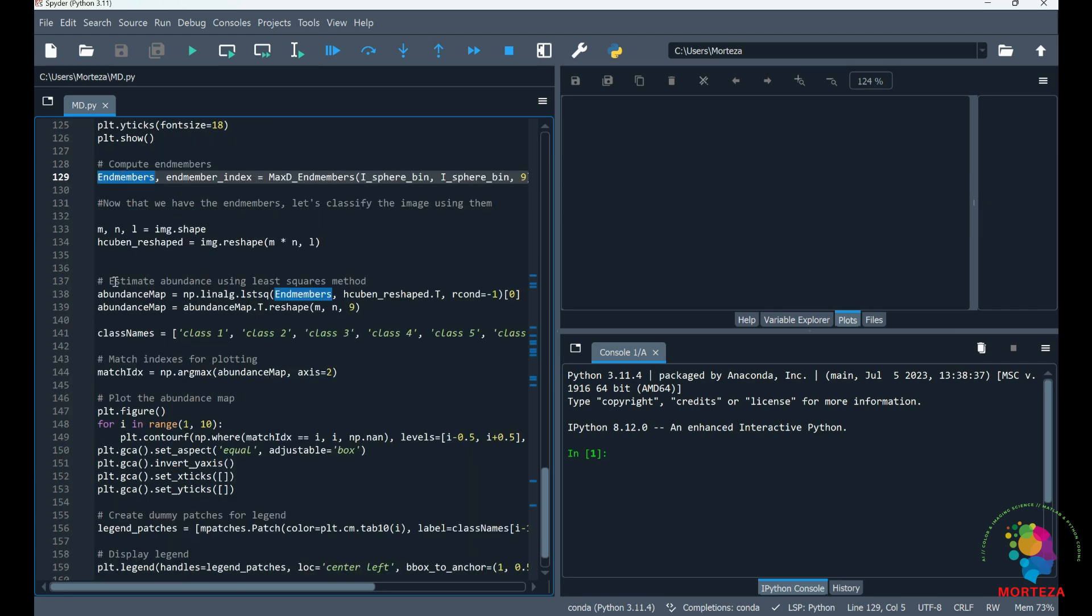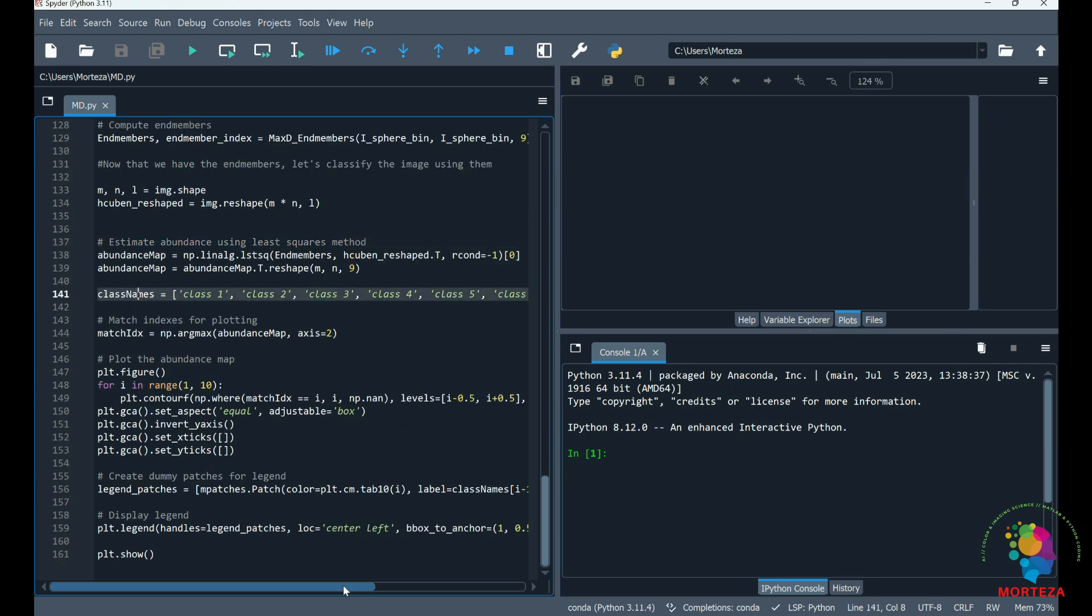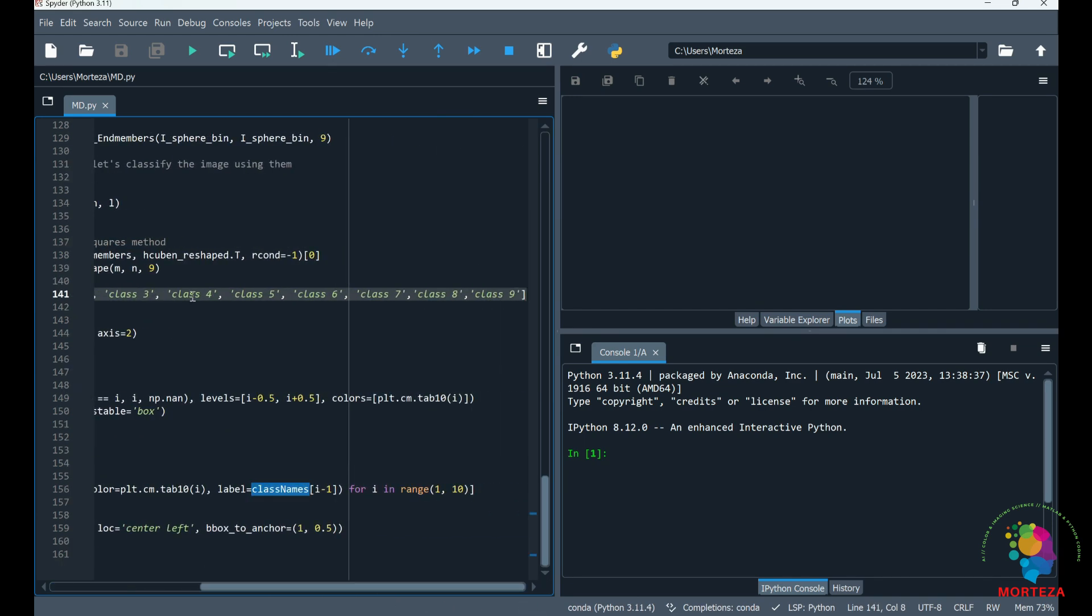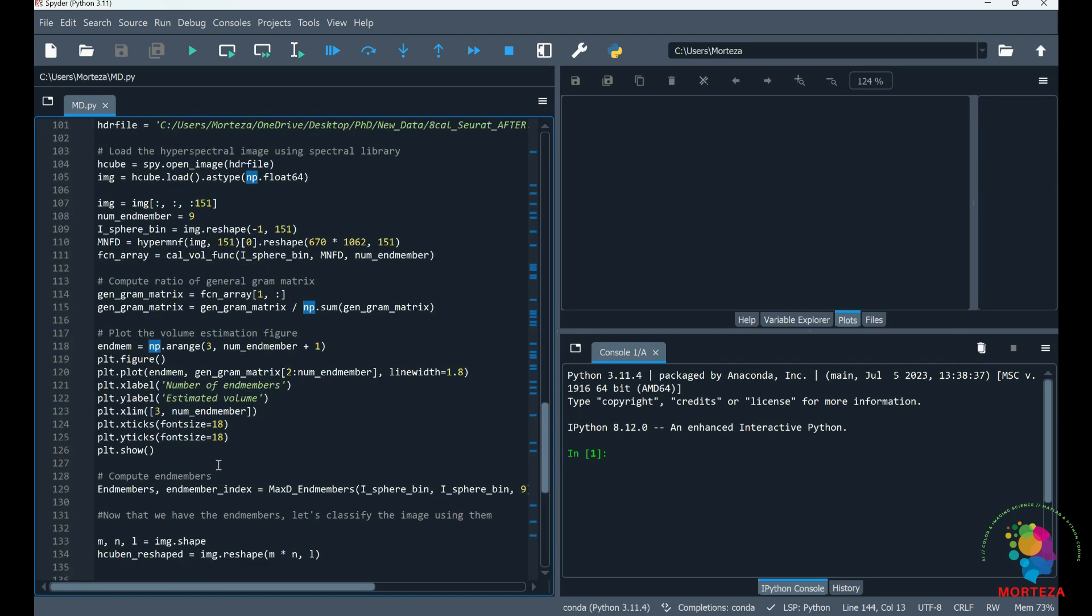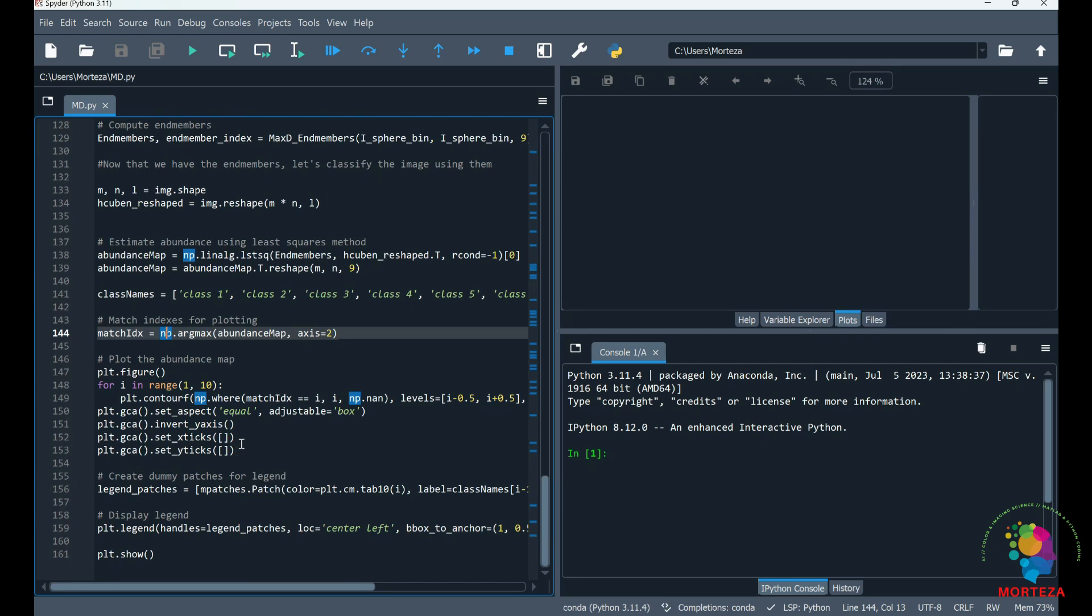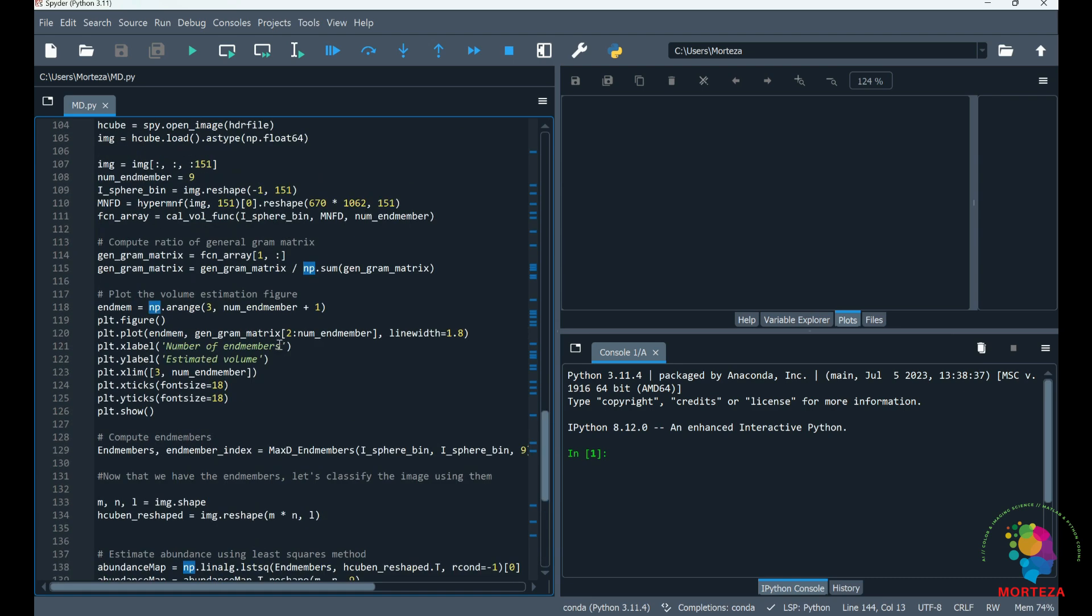This is how we estimate the abundance using least squares, and then we have nine classes as I said—class one, two, three, four, five, six, seven, eight, and nine. Then we match the indexes for plotting. This is where we show the results and we also add a legend to the figure. That said, it's very simple. We just have to specify the number of end members, and then we extract them, and then we use them to classify the hyperspectral image using maximum abundance. Okay, let's run it and see what happens.